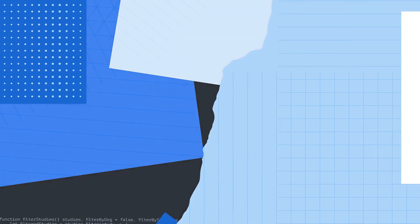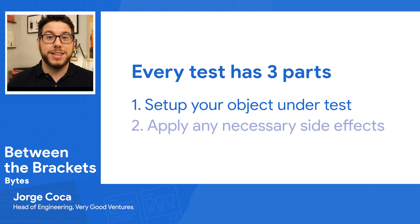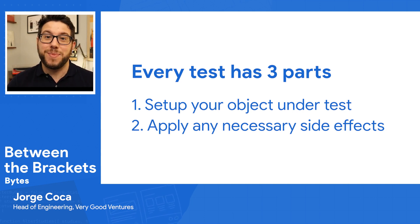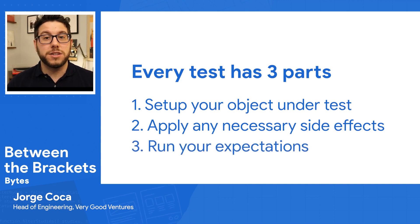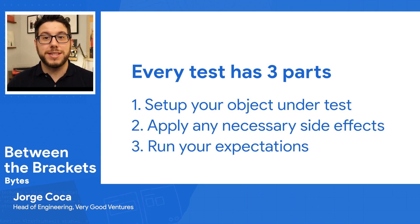How do we test this? Every test has three differentiated parts. The first: setting up the objects we're going to test and their dependencies, so we can control behavior through mocking. The second part is applying side effects — interacting with our object, calling different methods — to produce a result. The third and last part is running our expectations. Once we apply our side effects and receive the result, we make sure that result matches our expectation. If those two are the same, we consider the test successful.